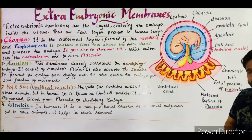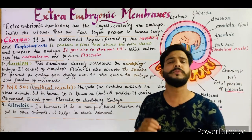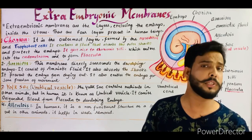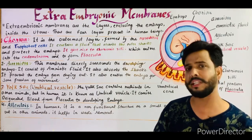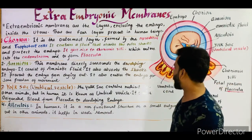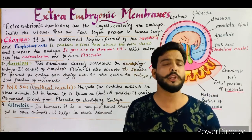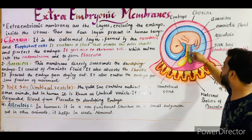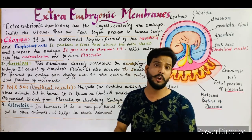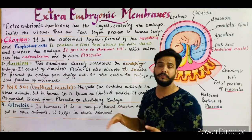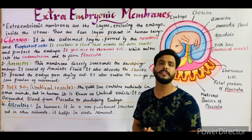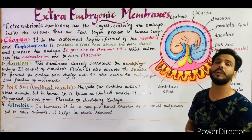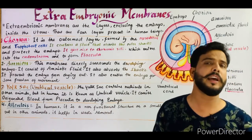The fourth and last membrane is the allantois, shown as the green-colored structure in the diagram. It is actually a small outgrowth and is non-functional in human beings. However, in other animals (non-humans), it helps in excretion — specifically in the removal of nitrogenous and other metabolic waste from the body of the embryo.